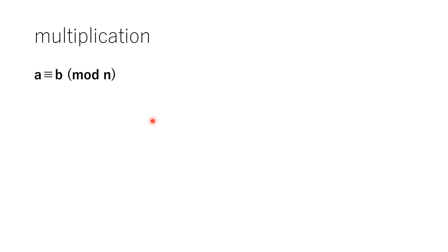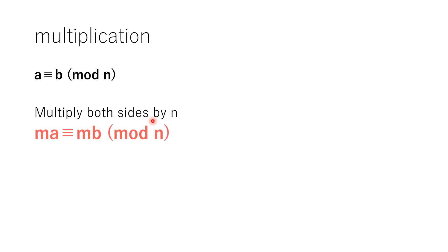Next, multiplication. A is congruent to B modulo N. Then, if you multiply both sides by N, you can get this new expression.